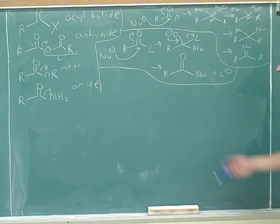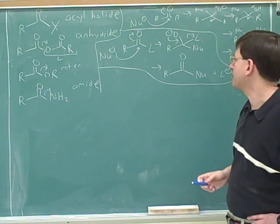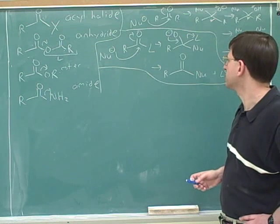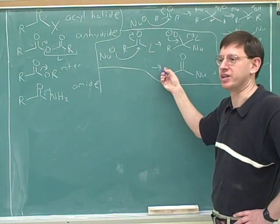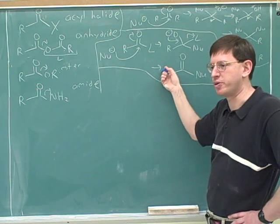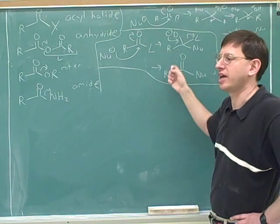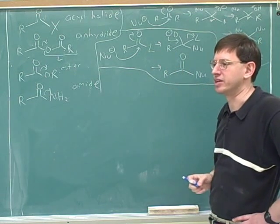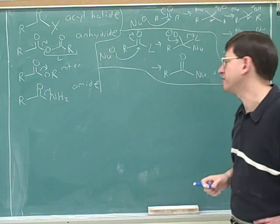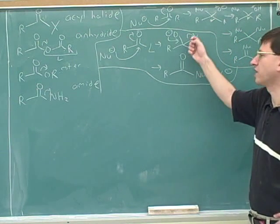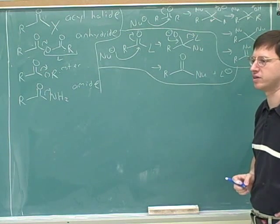So in some ways acyl substitution is simpler. There are basically two steps: attack the carbonyl and reform the carbonyl. The nucleophile attacks first, then the carbonyl reforms by kicking off the leaving group. Part of reforming the carbonyl is kicking off that leaving group. The most confusing part is still the protonation and deprotonation steps that surround these two core steps.